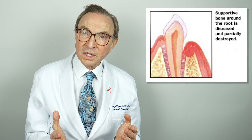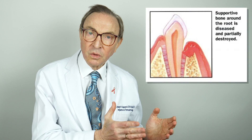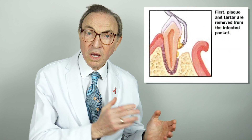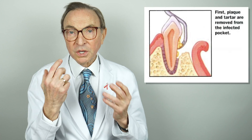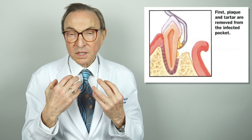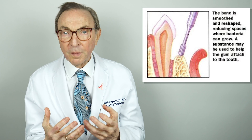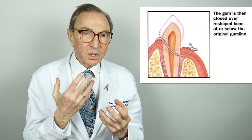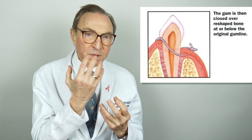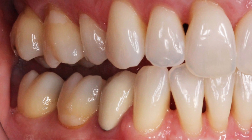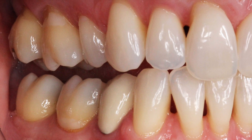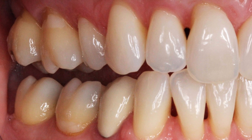I used to treat gum disease as many people still do — I'll call it the old-fashioned way — where you're cutting away gum tissue to eliminate these pockets where bacteria lodges and causes infection. But when you cut away that gum tissue it very often leaves gaps between the teeth, the roots become sensitive, sometimes it's even harder to clean because of the sensitivity, and I don't know that it's particularly effective in stopping periodontal disease.